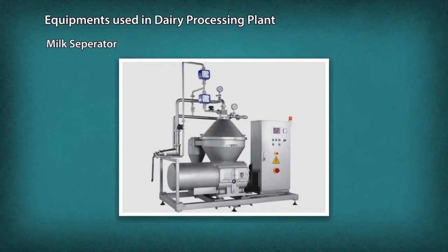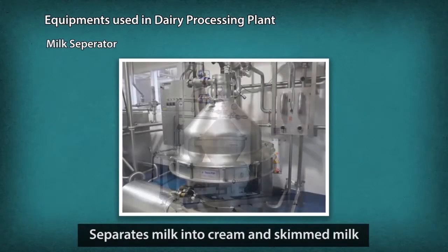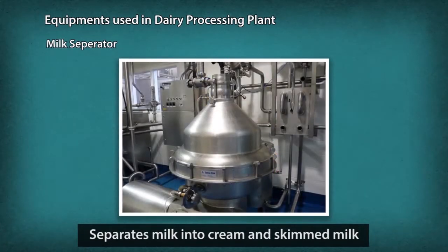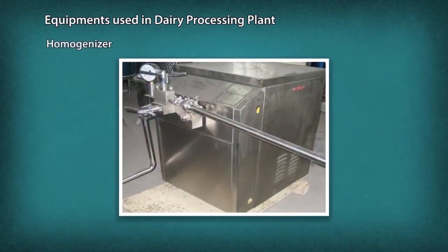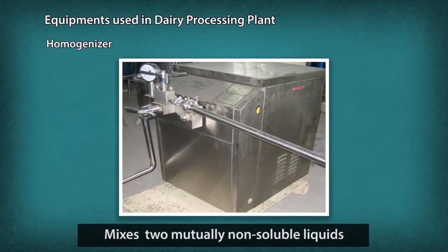A Milk Separator is a centrifugal device that separates milk into cream and skimmed milk. Homogenization is the process used to make a uniform mixture of two mutually non-soluble liquids. This is achieved by turning one of the liquids into a state consisting of extremely small particles distributed uniformly throughout the other liquid.